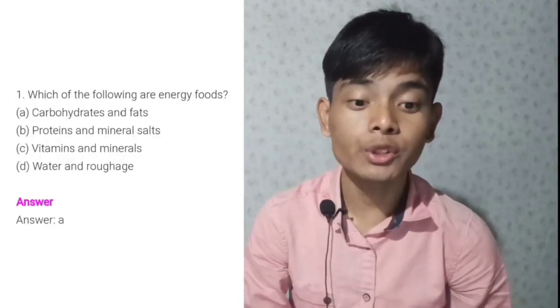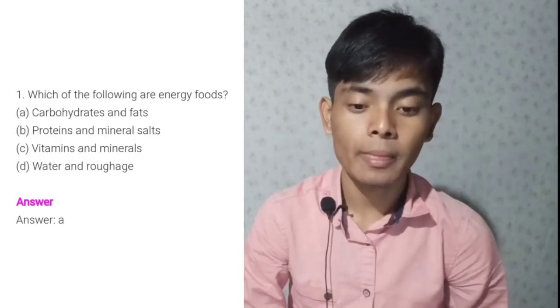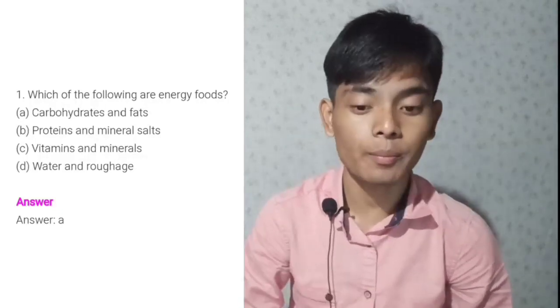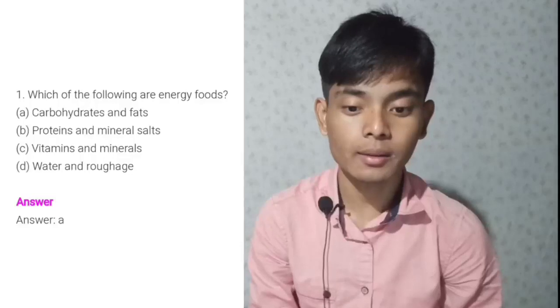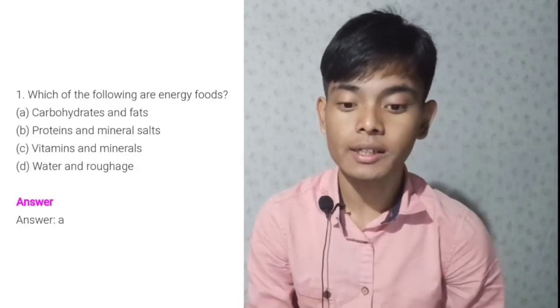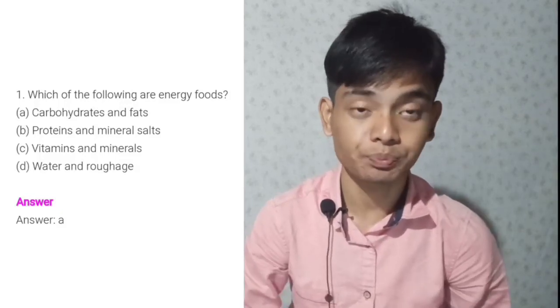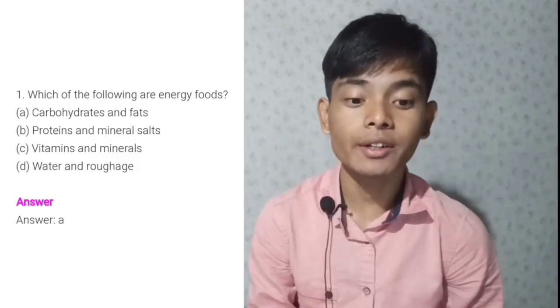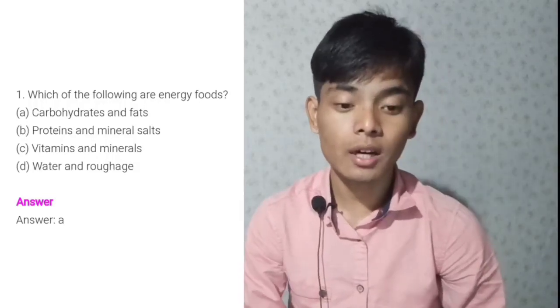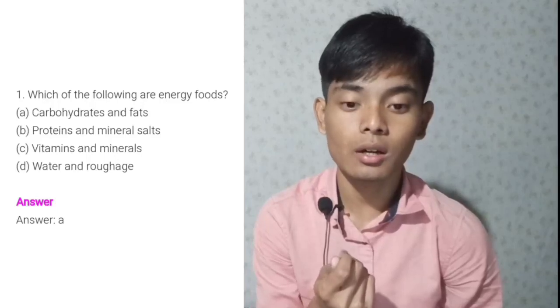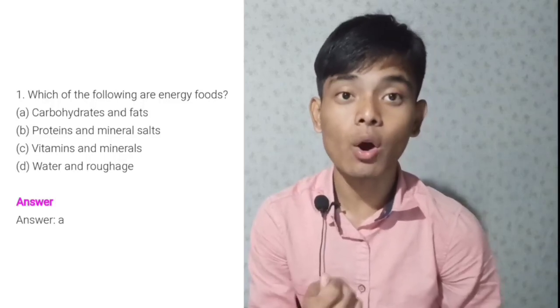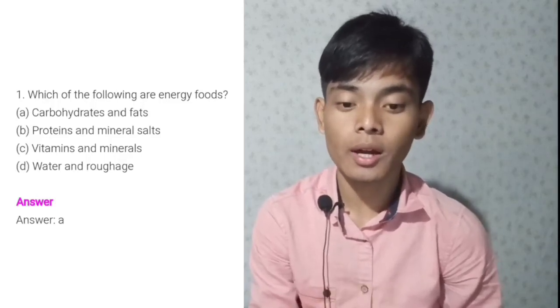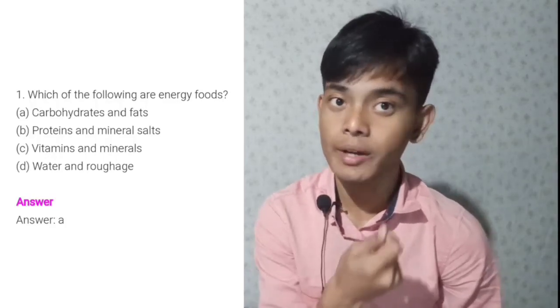So now question discuss kareim. Question number one: Which of the followings are energy food? A — carbohydrates and fat. B — proteins and minerals. C — vitamins and minerals. D — water and roughage. Energy provide kone kare? Answer haise A — carbohydrates and fats. Carbohydrates thaakke rice, fats thaakke oils — ehati instant energy amak provide kare.